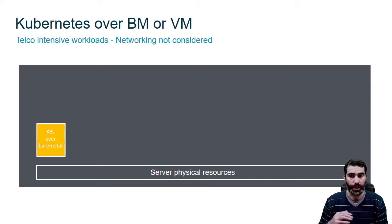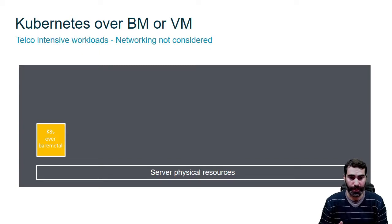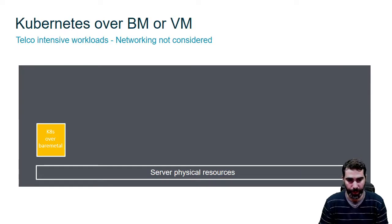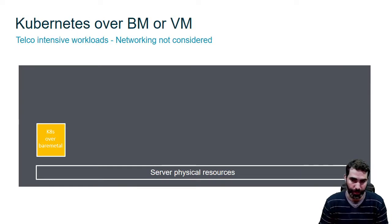The most basic setup would be to simply install Kubernetes over bare metal. In this case our workloads, our pods, will be using shared resources — they will be sharing the physical resources among them. So we are going to get a good performance but not the optimal one.